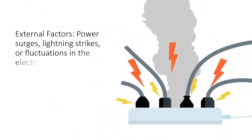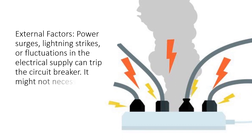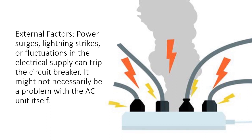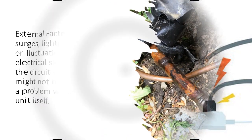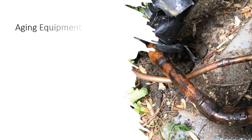External factors: Power surges, lightning strikes, or fluctuations in the electrical supply can trip the circuit breaker. It might not necessarily be a problem with the AC unit itself.